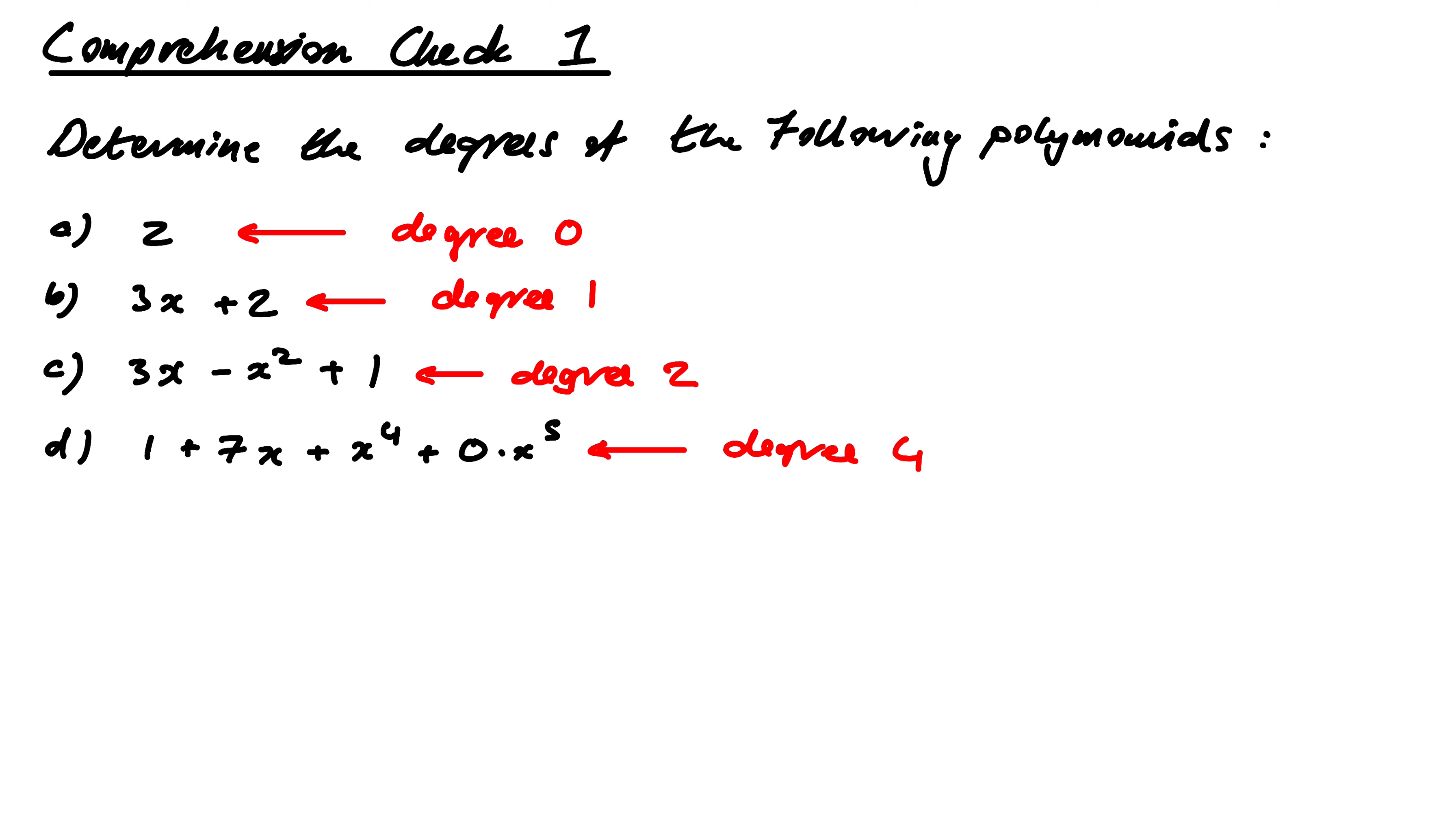And something to say about this last one. It does have coefficients, right? Really, from a0 up to a5, if you want. It's just some of them are 0, so we don't bother to leave them in. And so ordinarily, if we were to write this guy, we would write this down as 1 plus 7x plus x to the 4. That's normally how we'd write it.